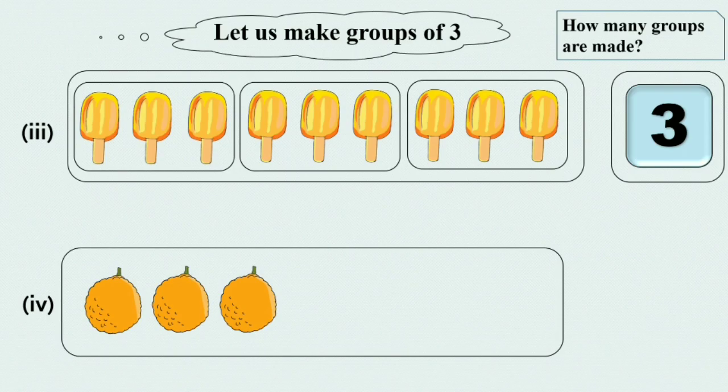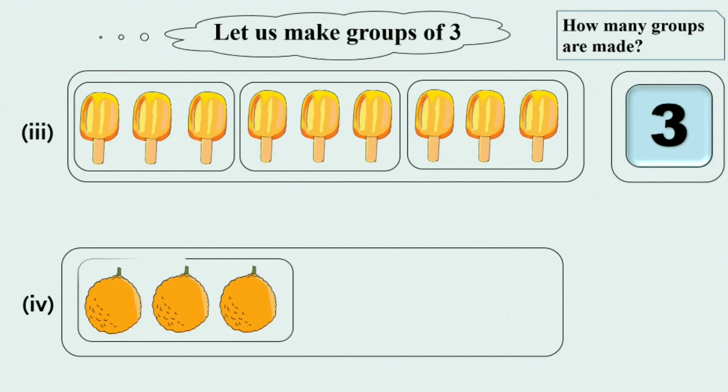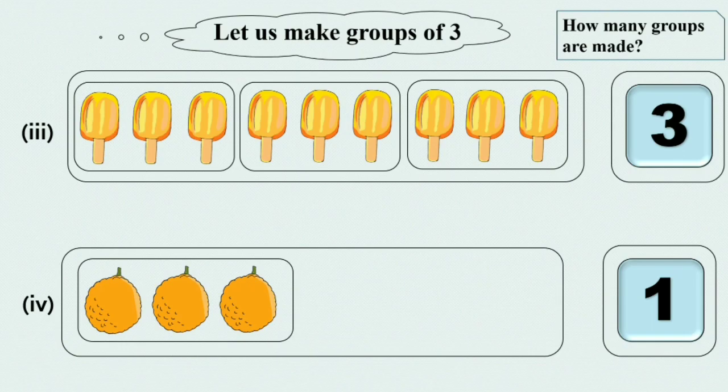Here are 3 oranges. We have to make group of 3. So we can make only 1 group of 3 oranges. 1 group. Write 1 in the box.